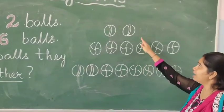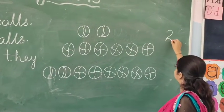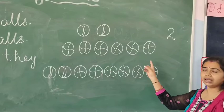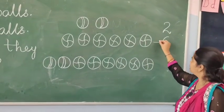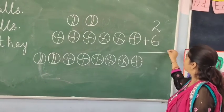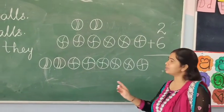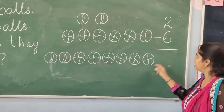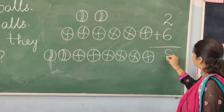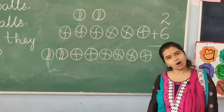So Maya has two balls. Raja has six balls. All together means plus. So total number of balls are: one, two, three, four, five, six, seven, eight. They have eight balls all together.